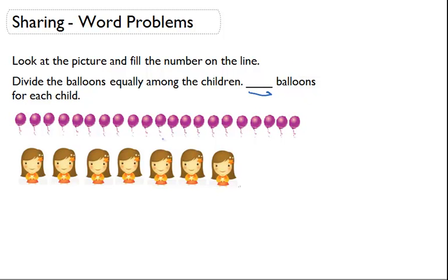So let's find out how many children we have. These are our little children we have here. There's one, two, three, four, five, six, seven children.